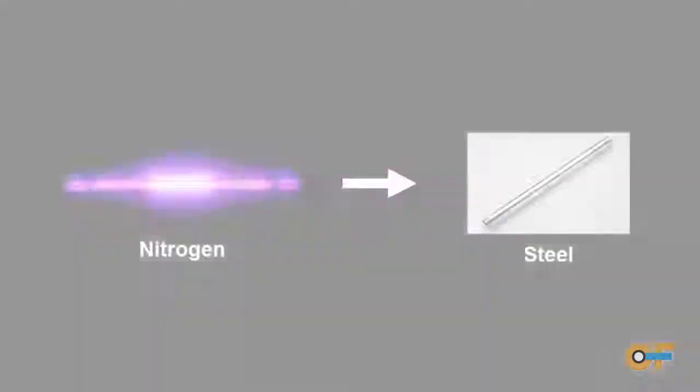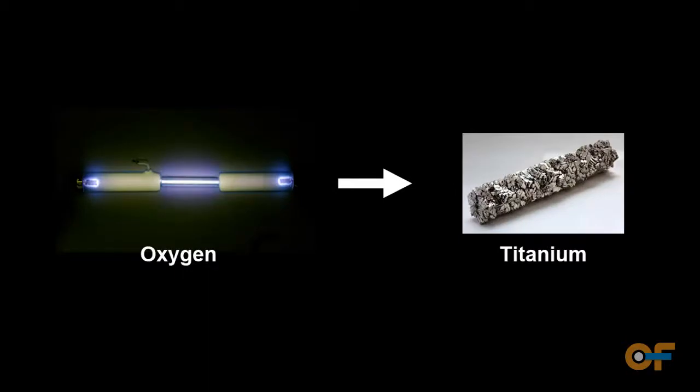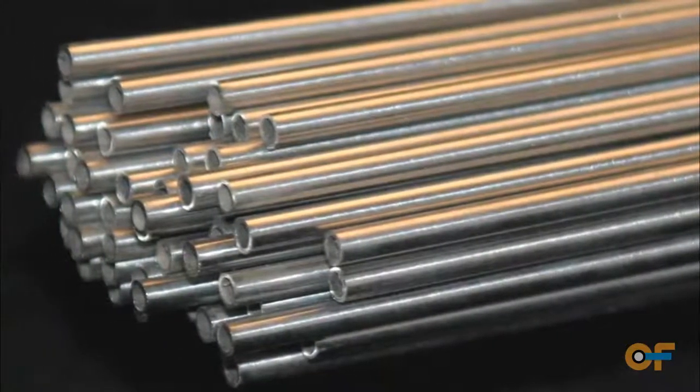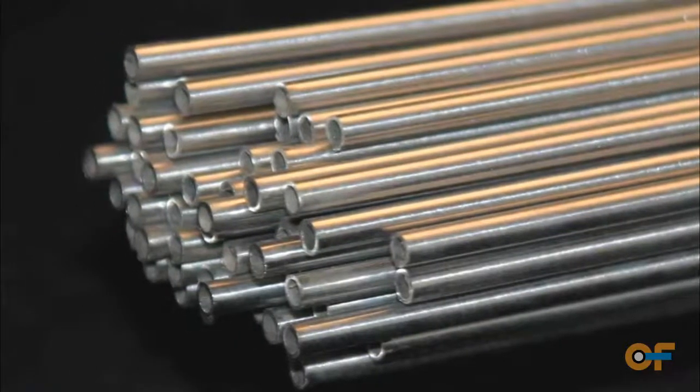By introducing a reactive gas, which I can turn on and off rapidly and modulate quickly, I can create structures that have varying compositions throughout them. And in the end, that makes a more efficient structure. By using the hollow wire, I can introduce the gas just where I want that reaction to occur, such that I get a new, refined composition in that location.